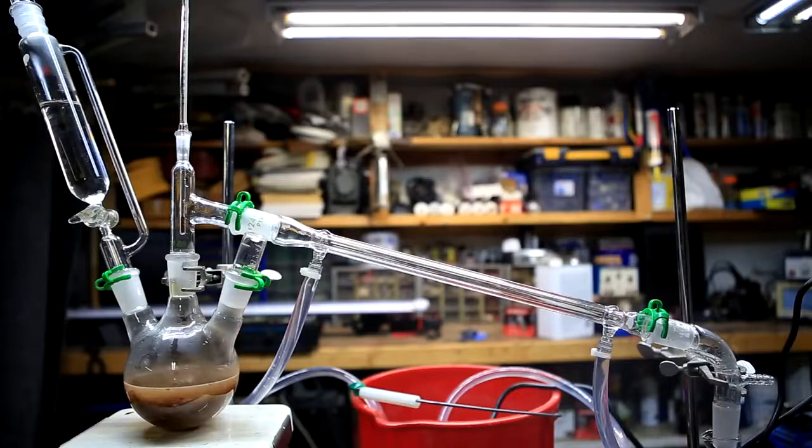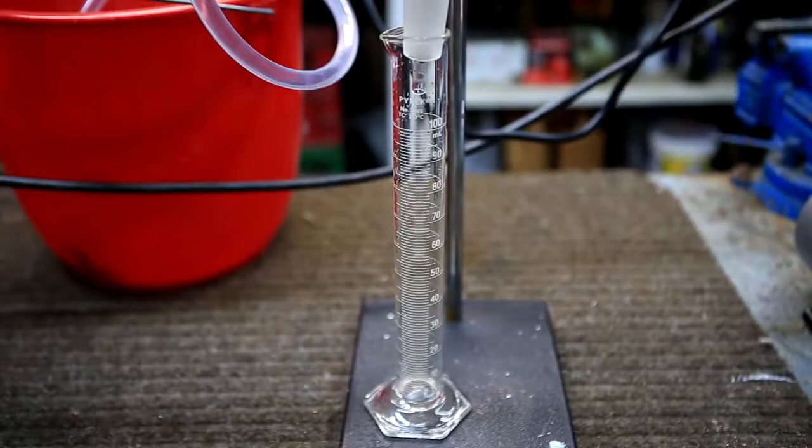The round bottom flask was then heated very lazily by directly touching it to a hot plate. I then placed a 100 milliliter graduated cylinder to catch the distillate.